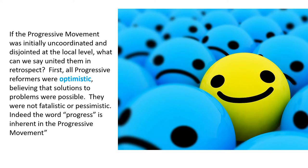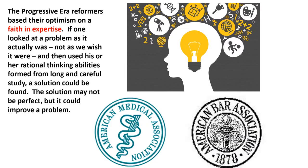Progressives had faith that the government could improve the situation. The Progressive Era's reformers based their optimism on the belief that the government would be full of experts — there was a real faith in expertise. If one looked at the problem as it actually was and used rational thinking abilities, you could have a solution. It may not make things perfect, but it could still improve a problem. It's during the Progressive Age that you start seeing the codification of a number of professions, like the American Medical Association or the American Bar Association — codifying expertise and putting faith in those experts.